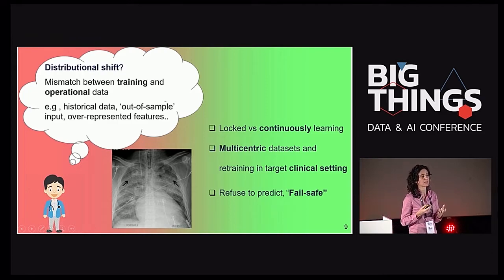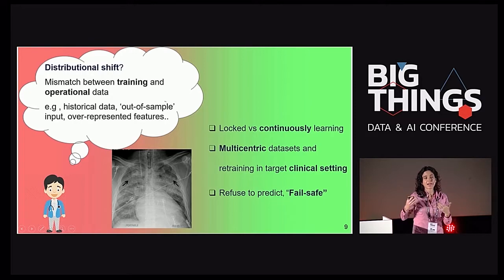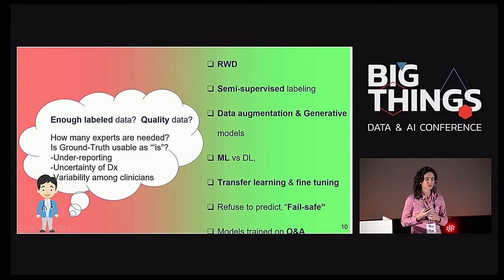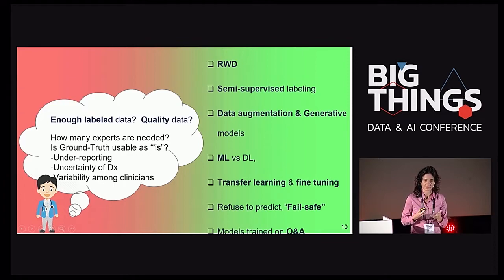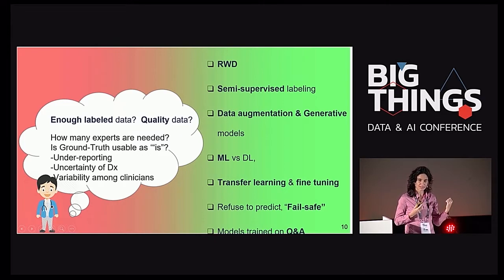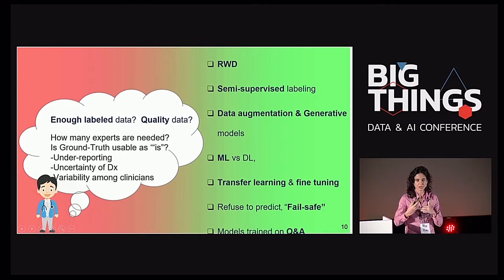Una vez que el modelo está entrenado, debe validarse en el clinical setting específico. Cuando haya un caso en el que el modelo no ha sido entrenado, debe informarse al médico y negarse a predecir ese caso por prudencia. Por otro lado, ¿existen suficientes datos etiquetados y de calidad? El ground truth en medicina es muy complejo. Para el melanoma el gold standard está claro porque tienes la anatomía patológica que confirma si es un melanoma; pero no hasta que lo ves en la AP lo confirmas.